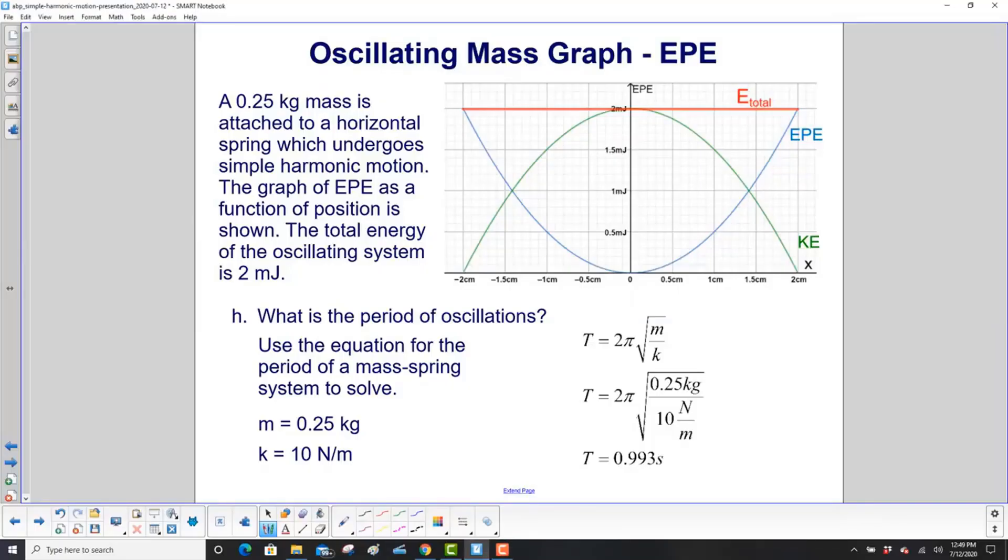What is the period of oscillations? Finally, a more simple question here. As long as you have the formula, which is 2 pi times the square root of M over K. Plug in our mass, which we have in kilograms. Plug in the value of spring constant we found. And the period is 0.993 seconds.